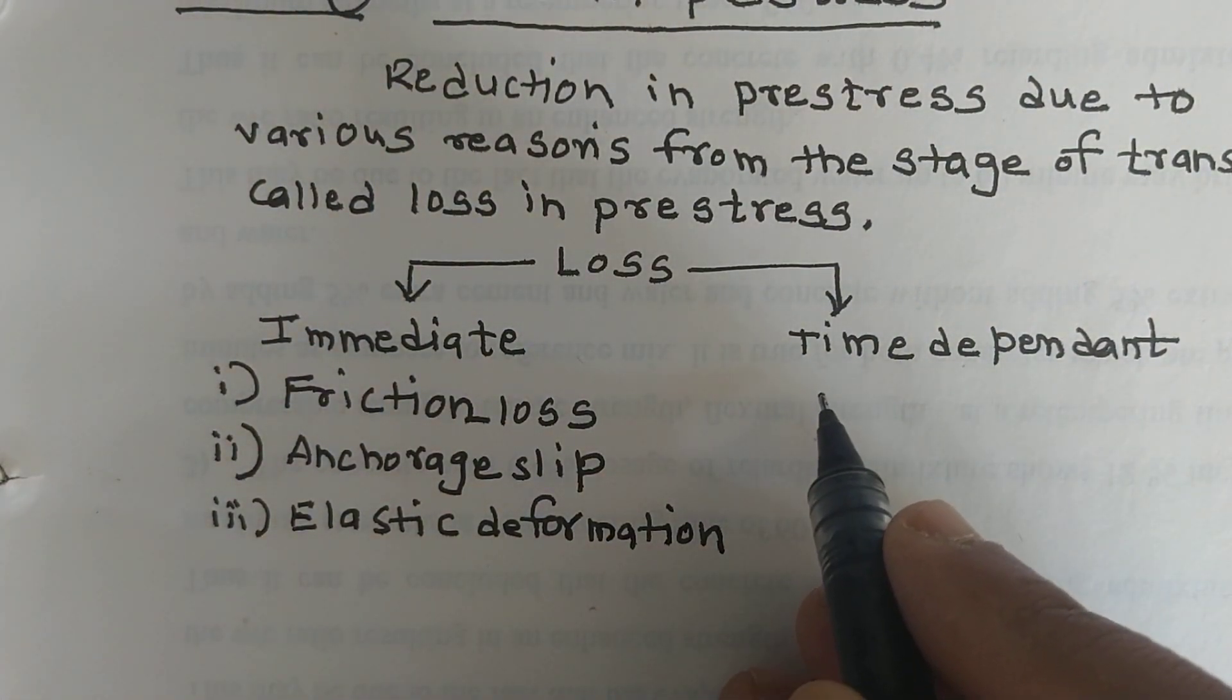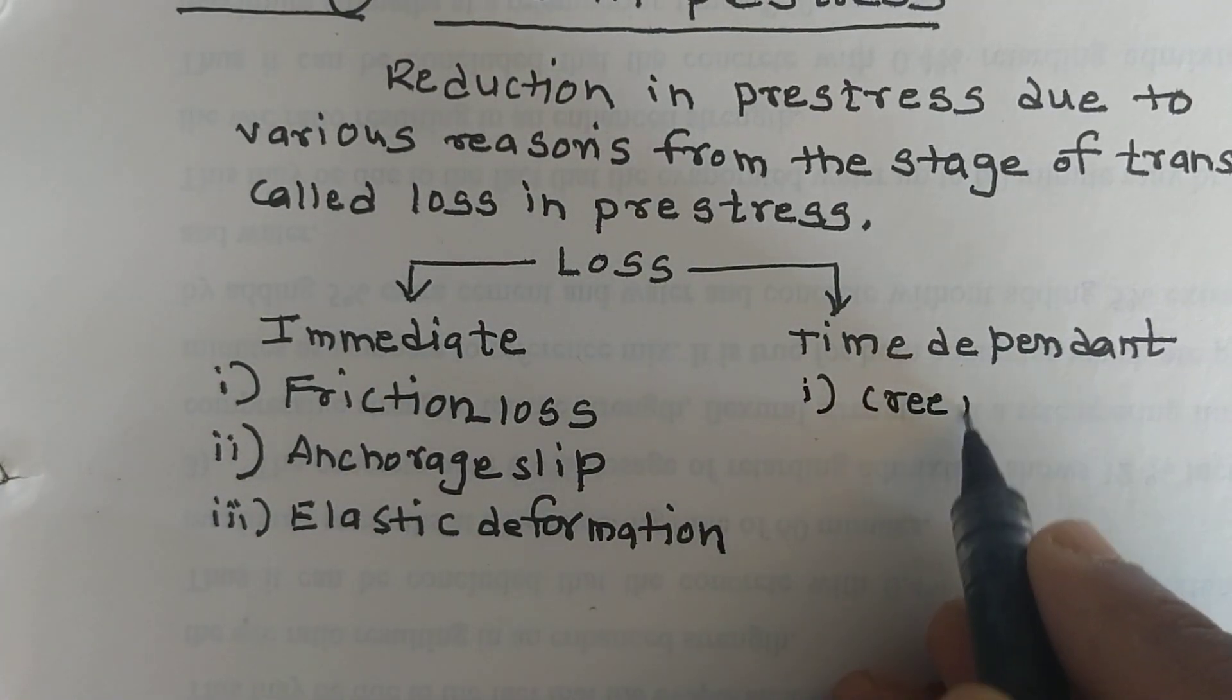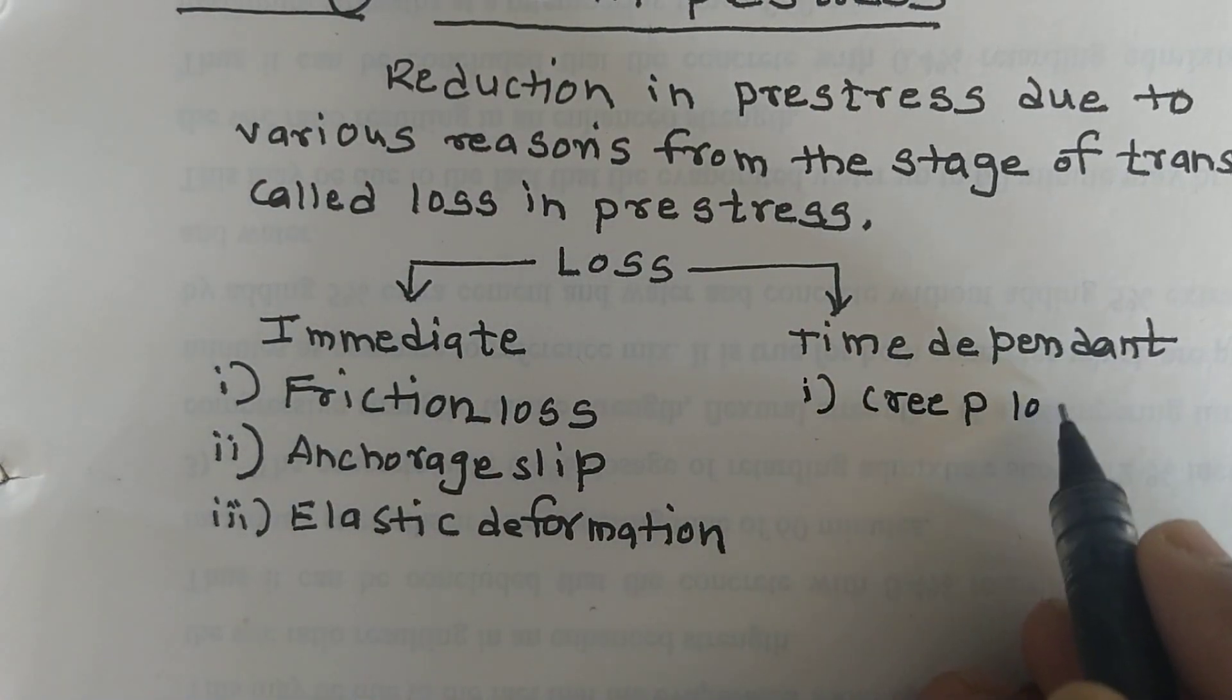Now under the time dependent losses, first is loss due to creep of concrete, is called creep loss.